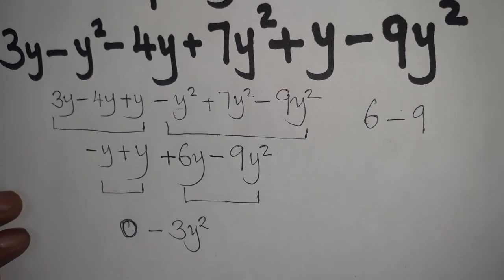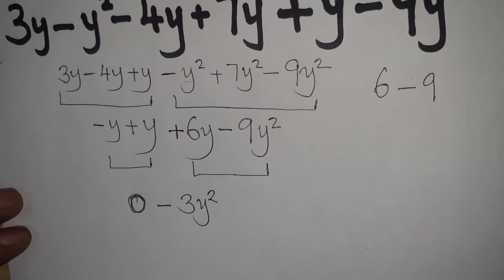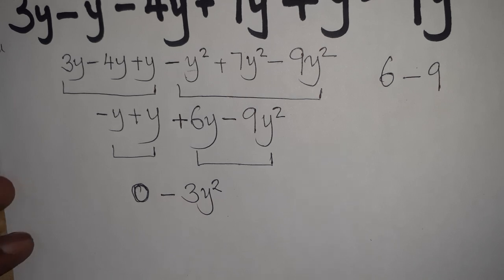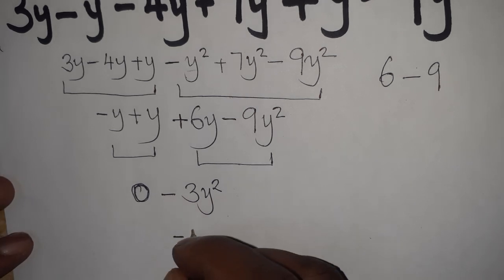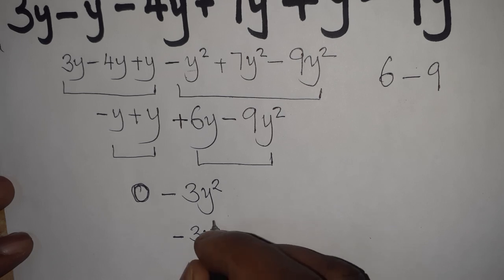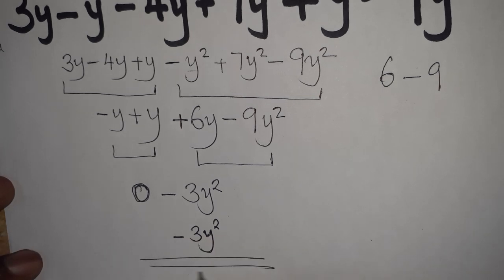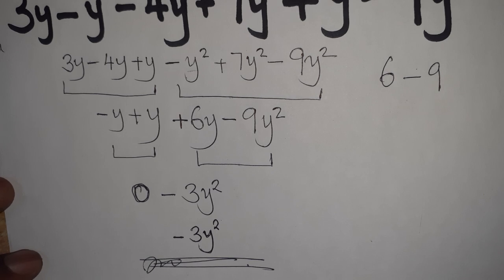All right. This is what we're going to have. Now, from this point, of course, you know that 0 minus 3y squared, this can better be written as minus 3y squared. This is what is going to be our answer. And if we haven't missed anything, this is the correct final answer. Thank you very much for watching.